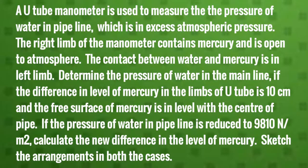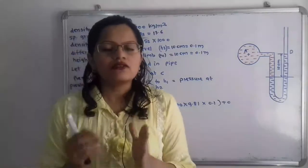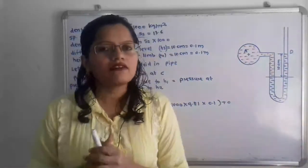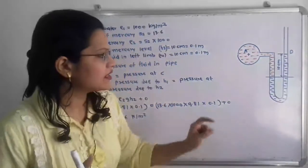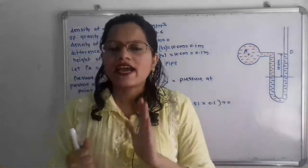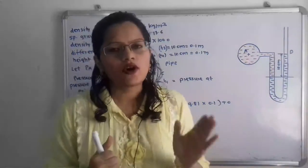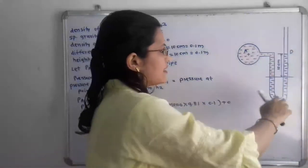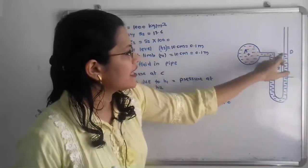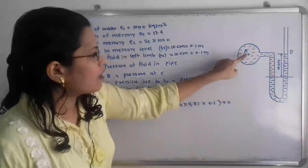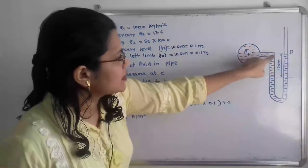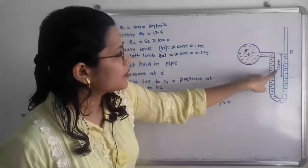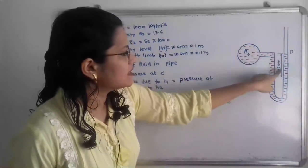Let us first understand how to construct the U-tube manometer as per the given data. The difference between the mercury levels is 10 centimeters. In the left limb there is water as well as mercury. This is the left limb and this is the right limb. In the right limb we show the mercury up to the level of the center of pipe. The center of pipe is point A, and from there is the level of mercury in the right limb. The difference between the mercury levels in the two limbs is 10 centimeters.